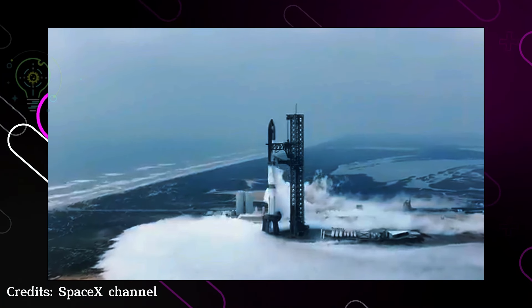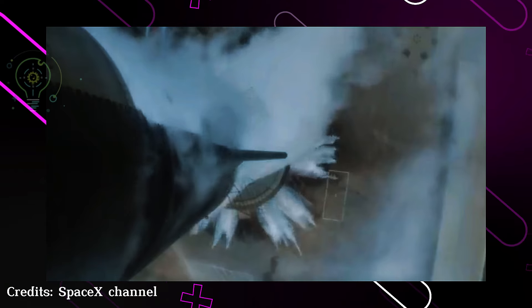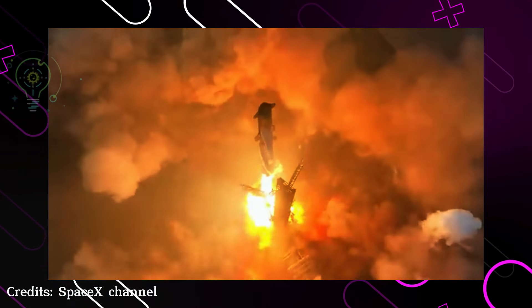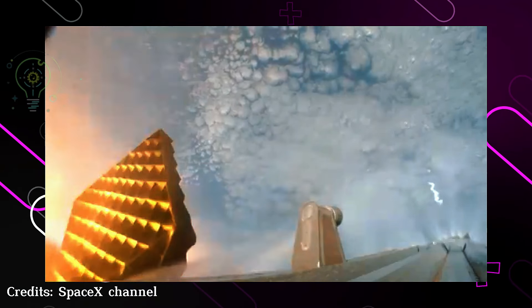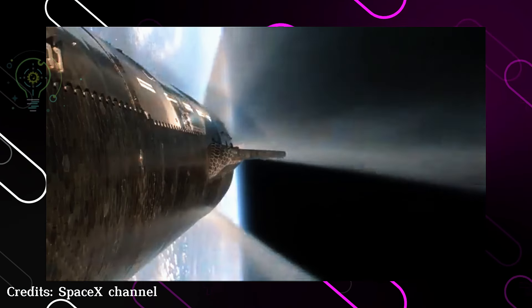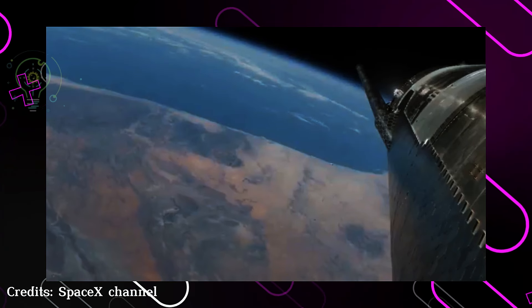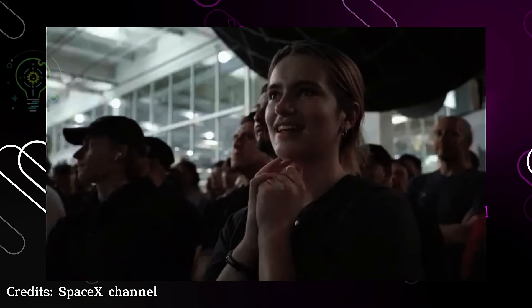Number four: Starship. Just when you think it can't go any further, enter Starship. This is the rocket Musk plans to use to take us to Mars. With the capacity to carry up to a hundred people, Starship is set to be the first step toward colonizing other planets. It's SpaceX's most ambitious rocket, designed for long-distance missions.